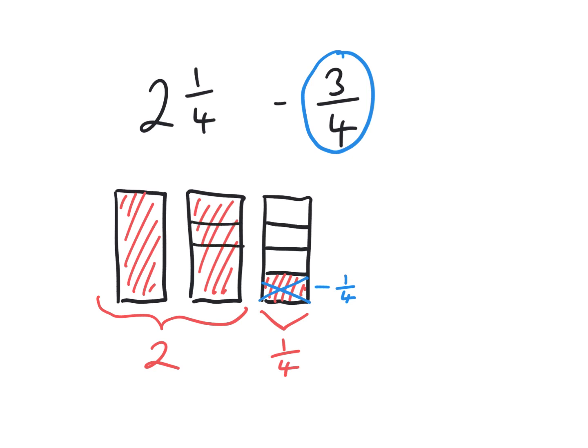If I break or separate my next whole bar into quarters as well, I can remove 2 more quarters. So I can remove another quarter here and another quarter here. So altogether we are left with 1 whole and 2 quarters or a half.